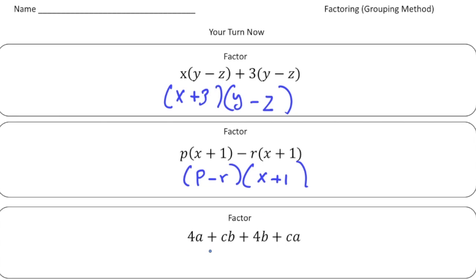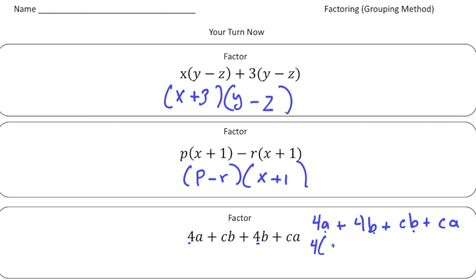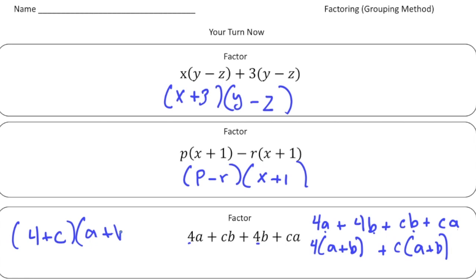Now for this one, we have 4a plus cb plus 4b plus ca. I need to rearrange these so we can try to pull out some common factors. I notice we have a 4 here and a 4 here, so I'm going to put those side by side and rewrite this as 4a plus 4b plus cb plus ca. After rearranging, notice how we have an a and a b in the first group, and also an a and a b in the second group — that's a sign you're doing this the right way. I factor out a 4 from the first two: four times a plus b. Plus, I factor out a c from the second two: c times a plus b. And now we can rewrite it as four plus c times a plus b.